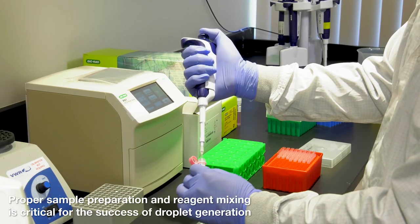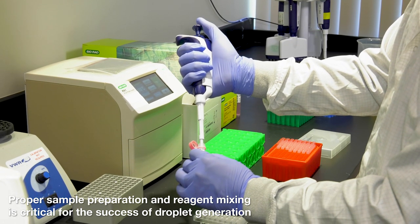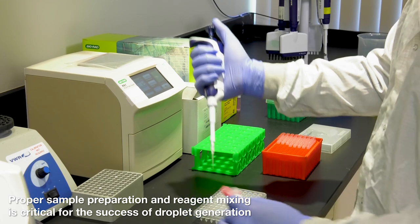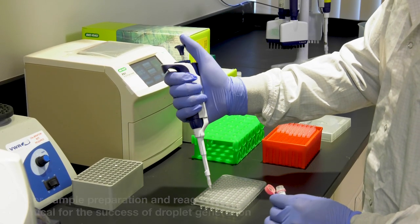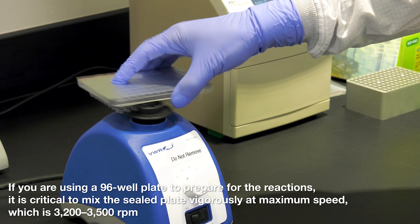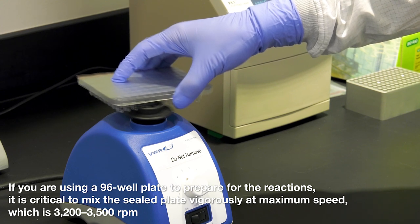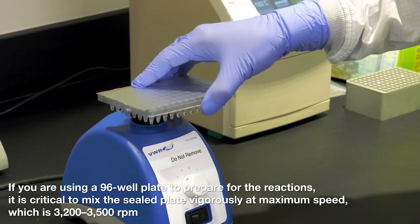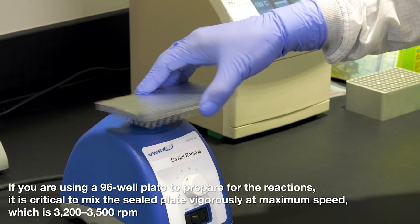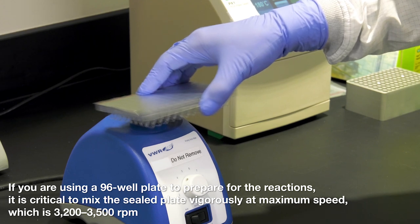In conclusion, proper sample preparation and reagent mixing is critical for the success of droplet generation. If you are using a 96 well plate to prepare for the reactions, it's critical to mix the sealed plate vigorously at maximum speed, which is 3200 to 3500 RPM.